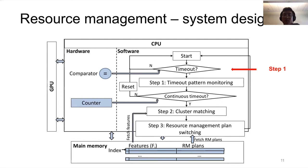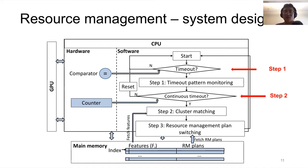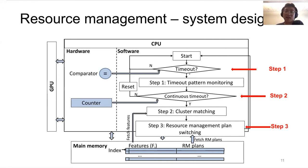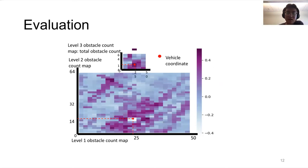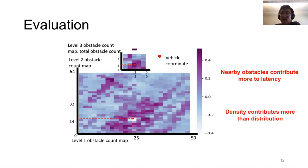We also made modifications in hardware. First, we monitor if there is a timeout — a timeout meaning LiDAR perception latency is longer than 100 milliseconds, since LiDAR frequency is 10 Hz. The second step is to monitor continuous timeouts — for example, 100 consecutive timeouts. If continuous timeouts occur, we perform a resource management plan switch: for the given obstacle distribution, we find the appropriate resource management plan for the current scenario. This figure shows the relationship between obstacle distribution and latency — deeper color indicates that obstacles in that area contribute more to perception latency. Nearby obstacles contribute more to latency, and density contributes more than distribution.